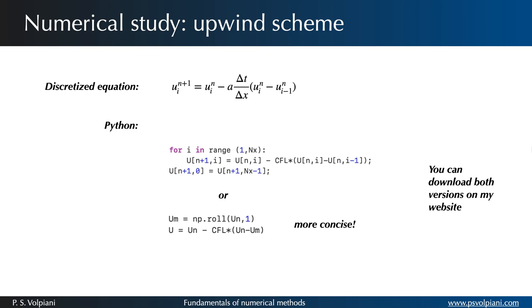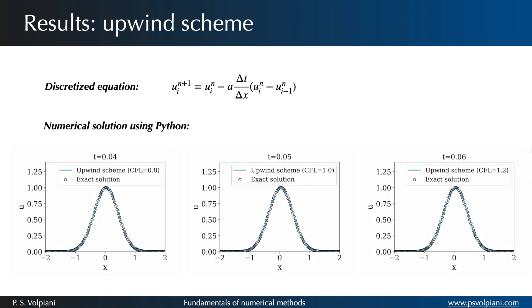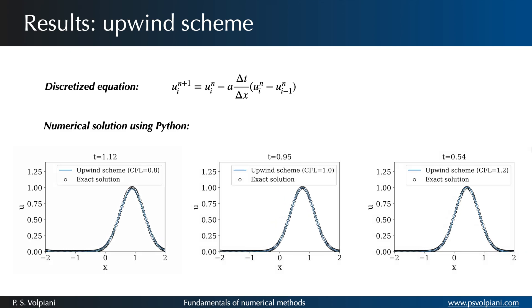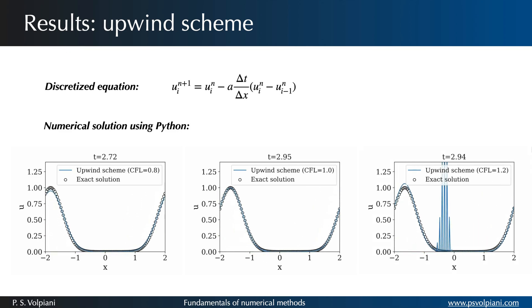Let's now compare both numerical and exact solutions after one turnaround. As expected we will obtain a stable solution if the CFL is less than or equal to one and an unstable solution if it's greater than one.